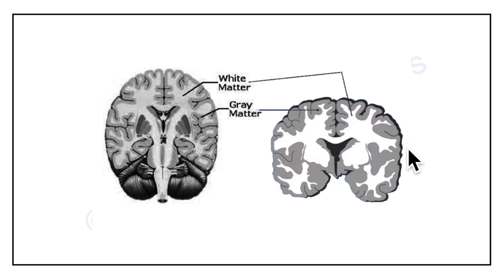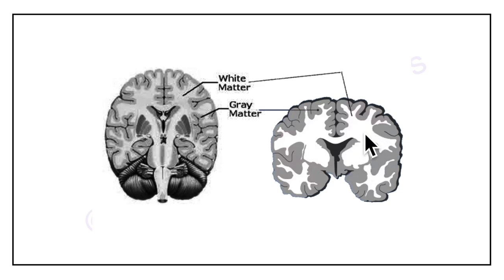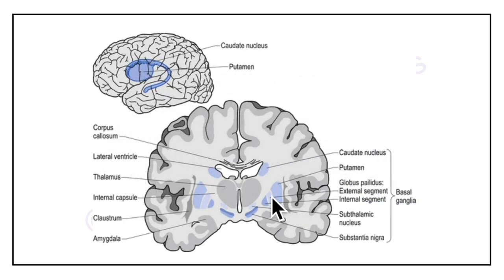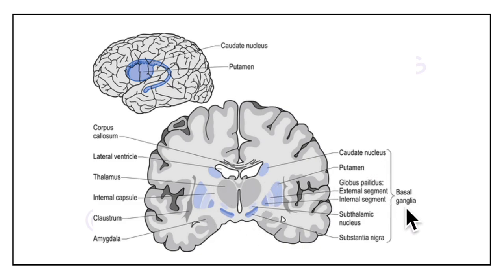Now this is a diagram showing the coronal section of the cerebrum. The cerebrum is made up of outer grey matter, seen here in grey, and an inner white matter seen in white. In this diagram you can see that there are some neuronal masses called the basal ganglia within the white matter. You can see these blue structures — they are together known as the basal ganglia.